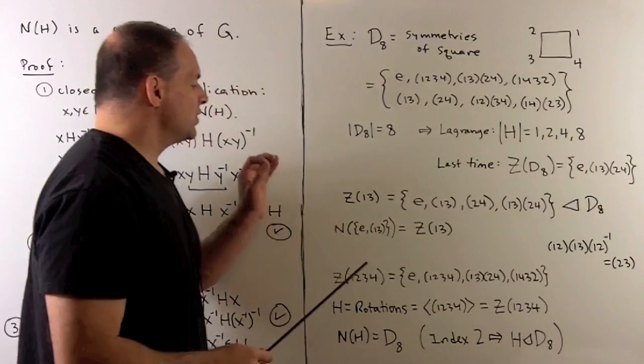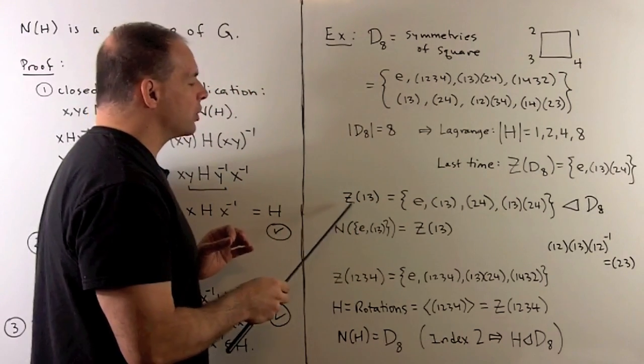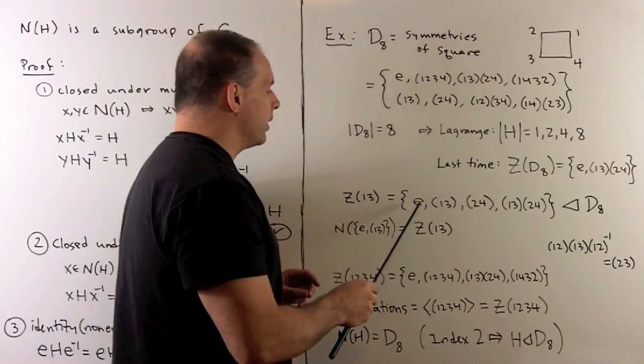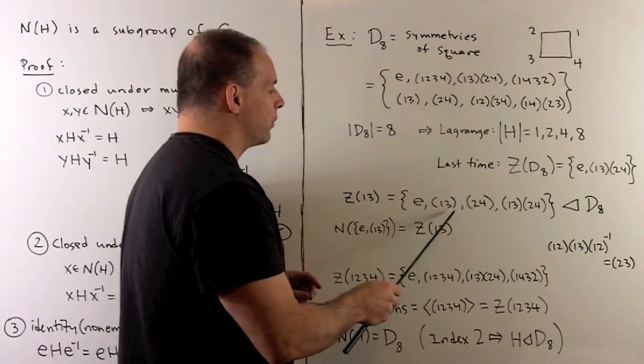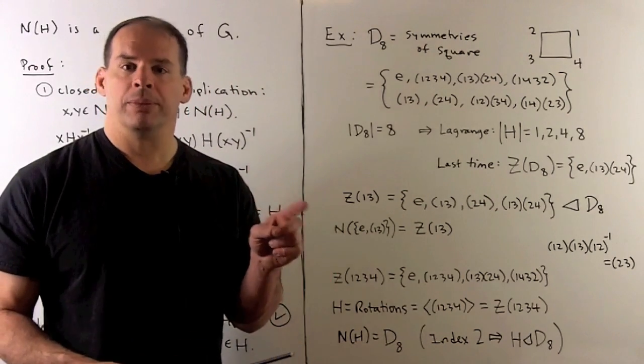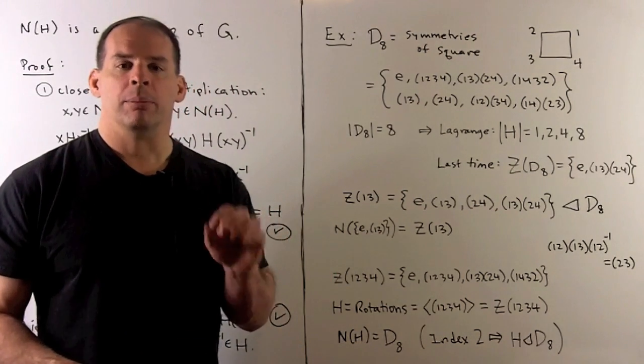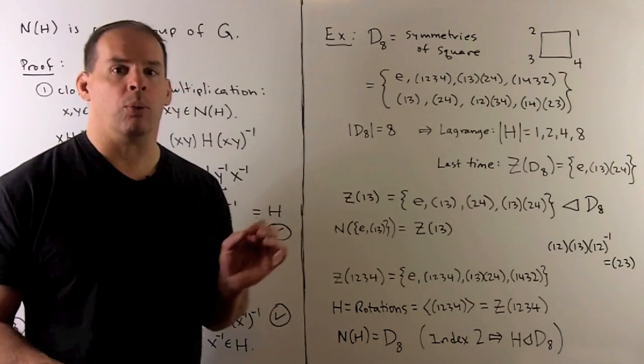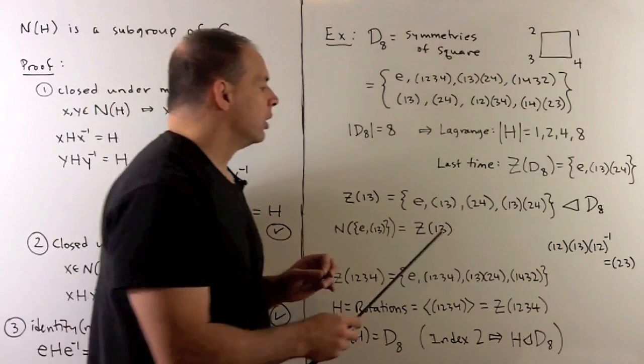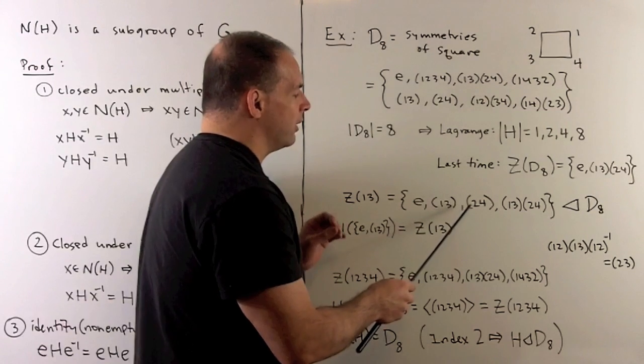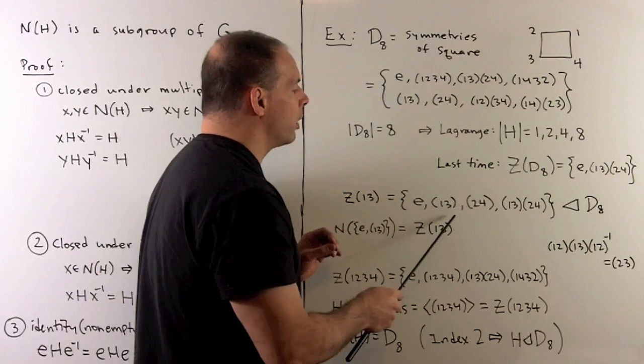Now let's consider the centralizer of the element (1,3). We have the identity element, we have (1,3) itself. We could take any powers of (1,3) - they'll commute with (1,3), but (1,3) squared is the identity, so we won't get anything new. If we consider the labels we're not using, then the two-cycle (2,4) will commute with (1,3). Then because we have a subgroup, the product will also be in the centralizer.